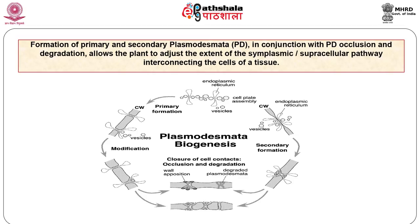Branched plasmodesmata formation may result from either the fission model or de novo pore formation. Twin pores may or may not remain connected by endoplasmic reticulum in the middle lamella region of the wall. Central cavities develop between interconnected plasmodesmata as new pores are being formed.